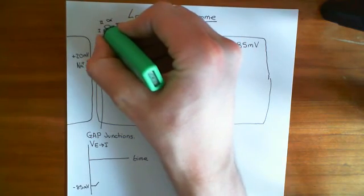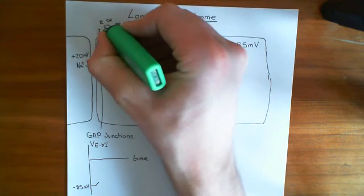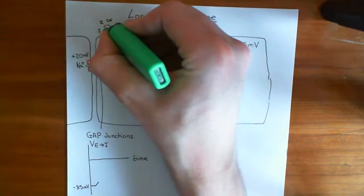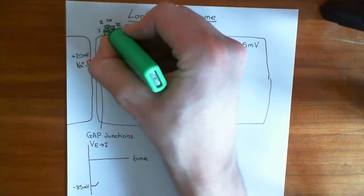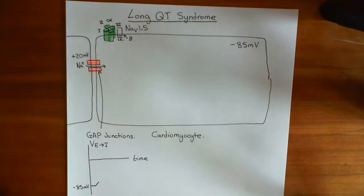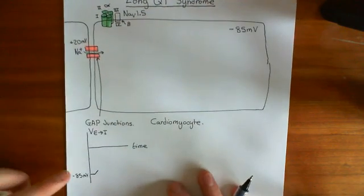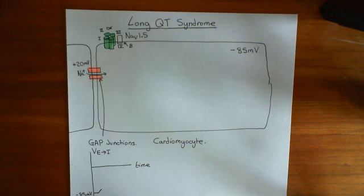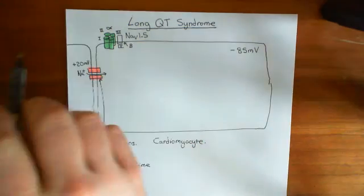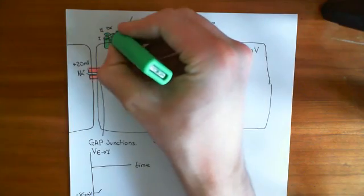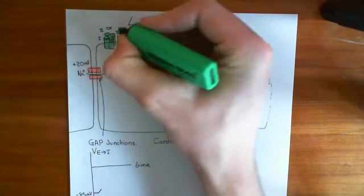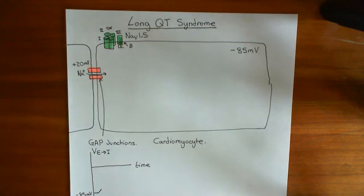This voltage-gated sodium channel is activated to open at a very low threshold potential. So a little depolarization is going to activate the NAV1.5-type voltage-gated sodium channel to open. Because we've slightly depolarized the membrane, this voltage-gated sodium channel is going to open.